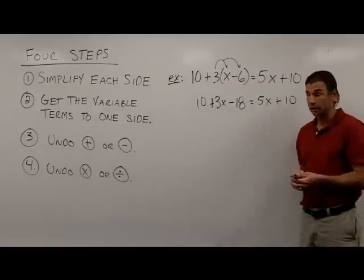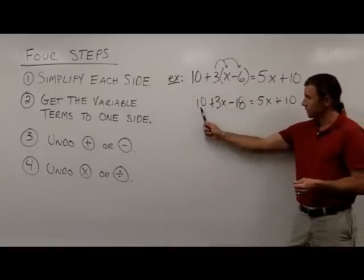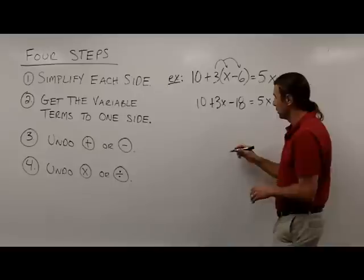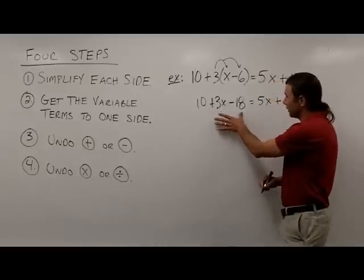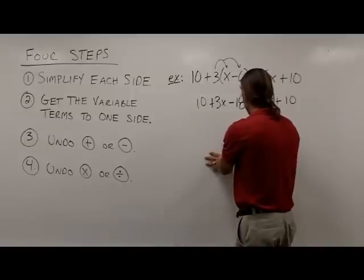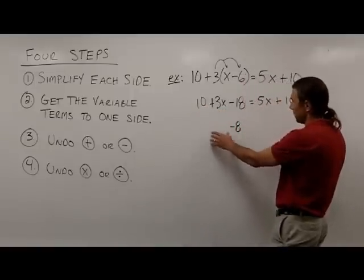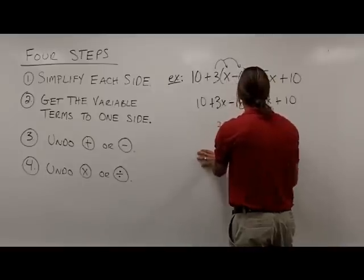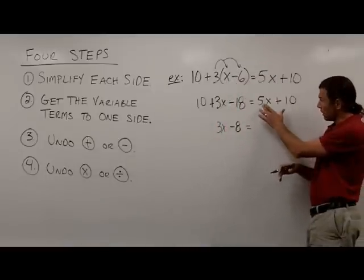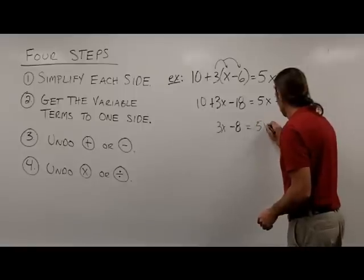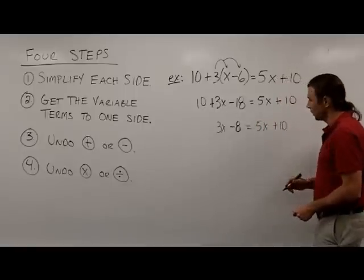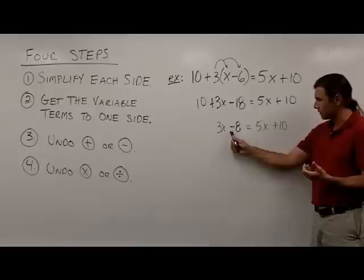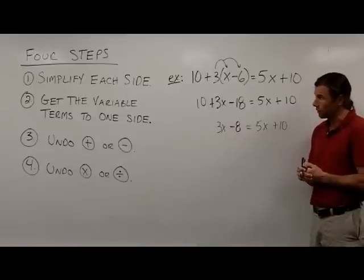Still working on simplifying this equation. Notice on the left side I have like terms — I have a 10 and a negative 18. Those can be combined: 10 plus negative 18 gives me negative 8. Now I'll bring down the rest of the problem. The 3x comes down, along with my equal sign, and over here on the right side, both the 5x and the 10. Notice now I cannot simplify either side — these sides are as simple as they can get. So I'm done with step 1.